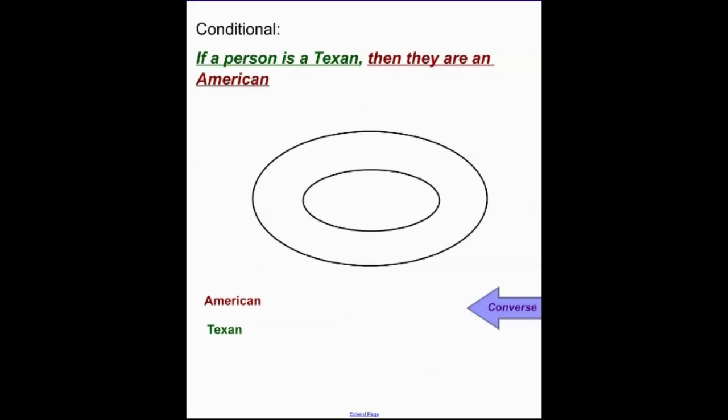This one is something you saw in class already. The conditional reads, if a person is a Texan, then they are an American. And we see the two circles here. This goes off the concept of sets and subsets, unions, intersections, which we need to cover more of before you hit Algebra 2.